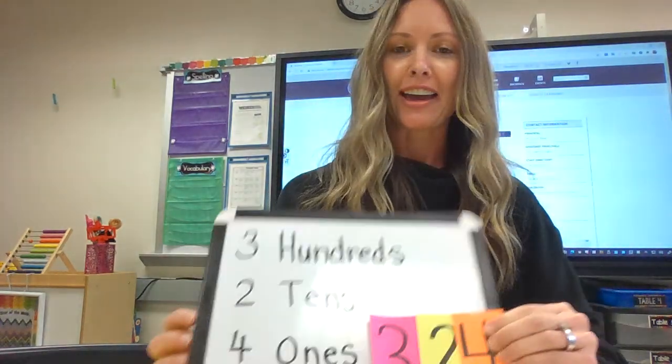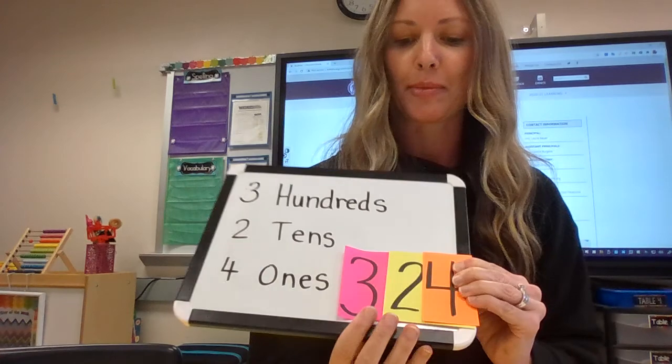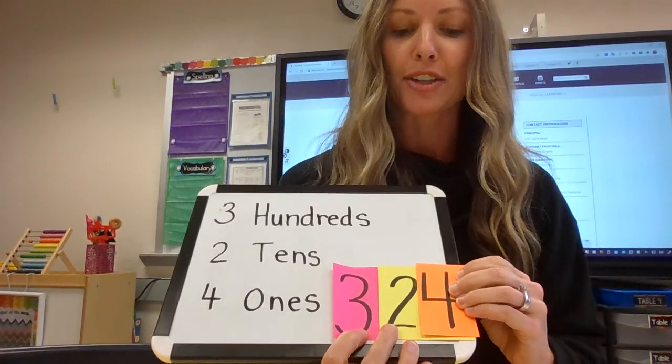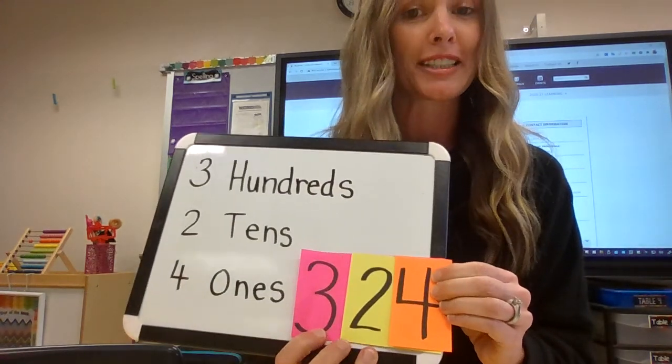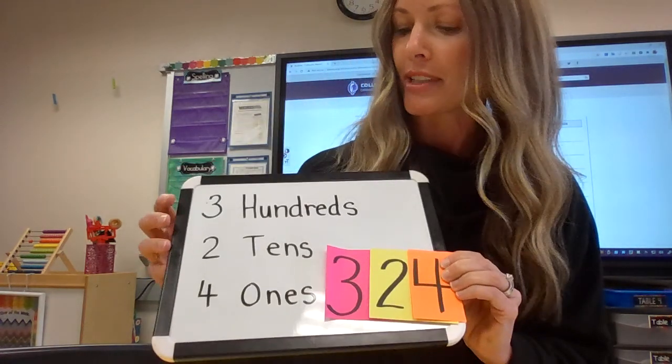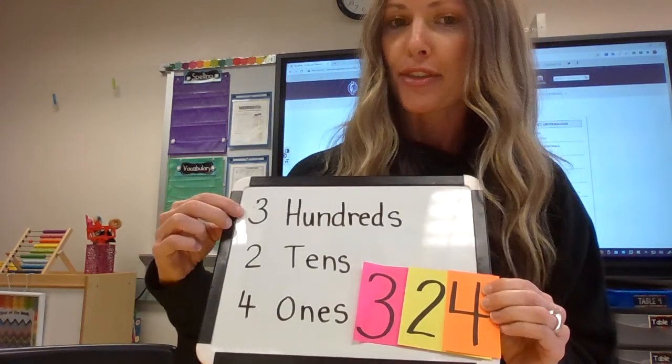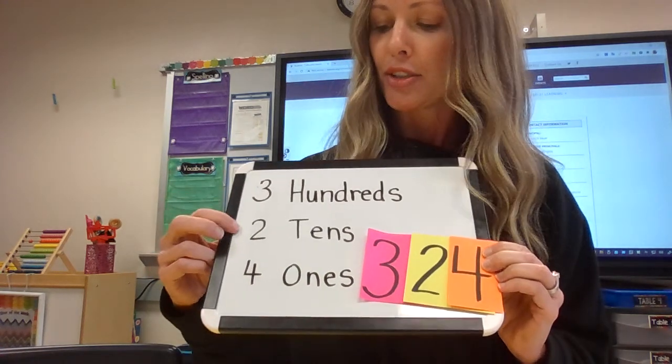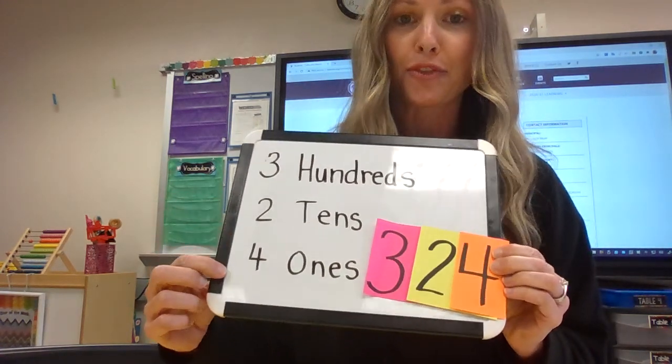Hi, second graders. Welcome to your math lesson for today. We're going to be talking about place value again. So I have a number up here on my board and my number is 324. And we know that that is the same as saying I have three hundreds, two tens, and four ones.